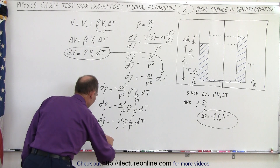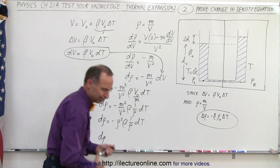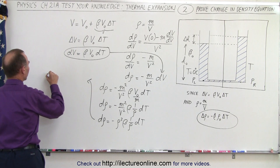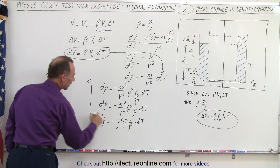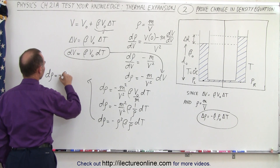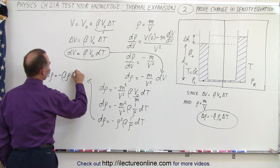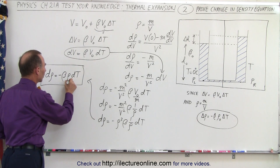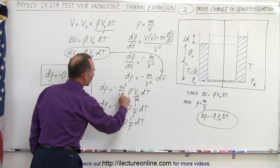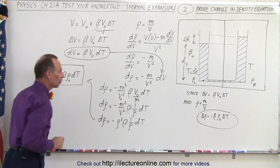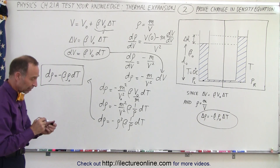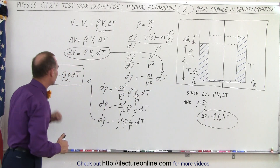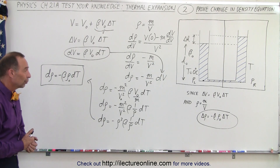Finally, simplifying that, density squared times 1 over density cancels to just density, so d(density) equals minus beta times density times dT. This is the equation we were looking for. Since we used the original volume, this is the original density, giving us the final equation. It's written as a differential equation in terms of changes in temperature and changes in density, but essentially it's the same relationship, and that is where that equation came from.